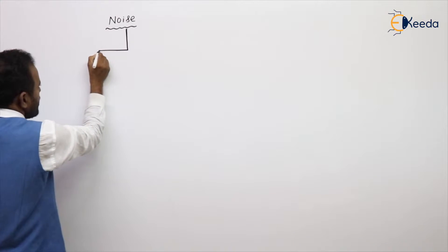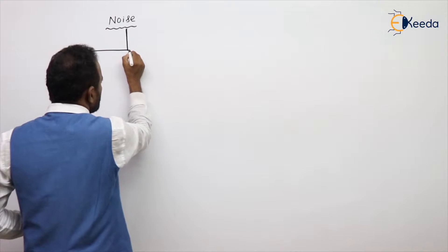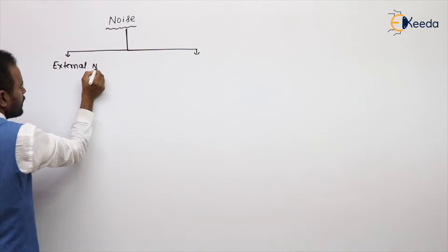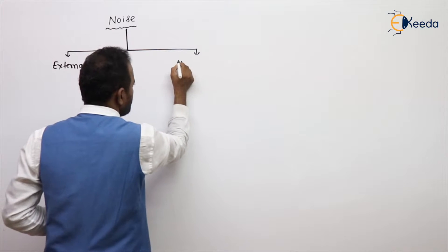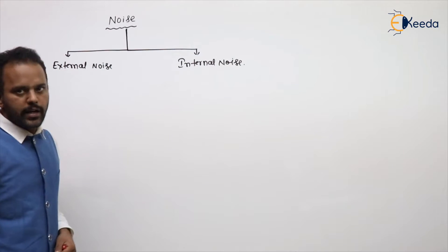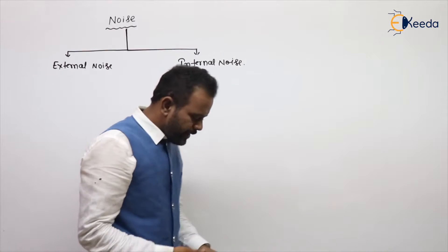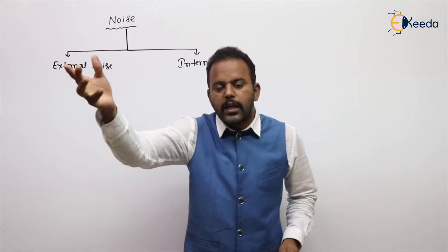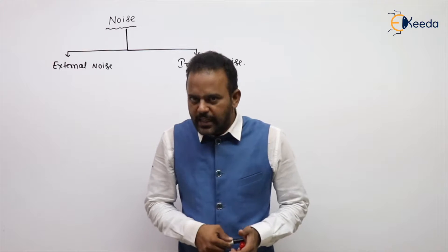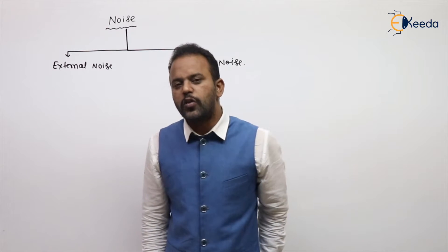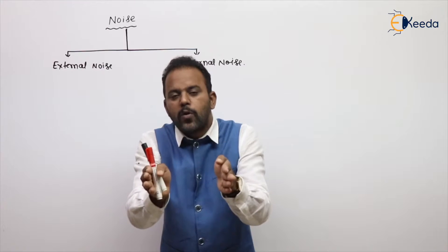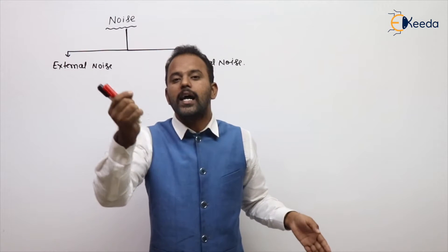This noise is broadly categorized into two parts: one is external noise — noise outside the communication system — and the other is internal noise. External noise is noise generated outside the communication system; it is not in the hands of the communication system. External noise is severe and intense. The only solution for external noise is to keep your receiver in a place where the external noise is less.